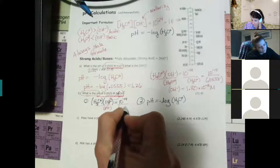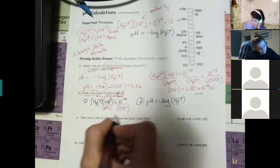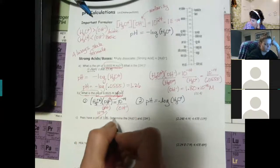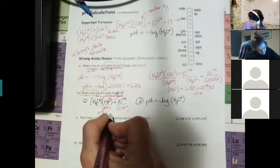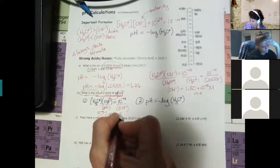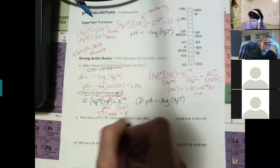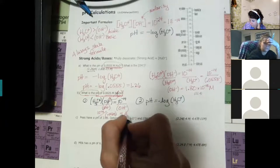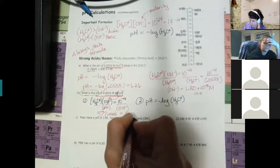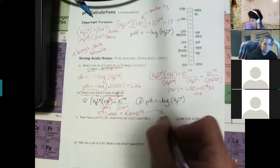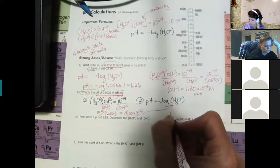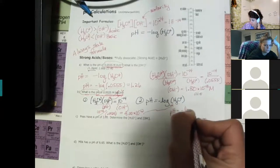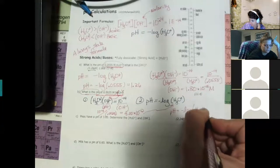Divide 10⁻¹⁴ by the hydroxide — so 10⁻¹⁴ ÷ 0.0025 — and you get 4.00×10⁻¹². Now plug that straight into pH = −log[H₃O⁺], so pH = −log(4×10⁻¹²).